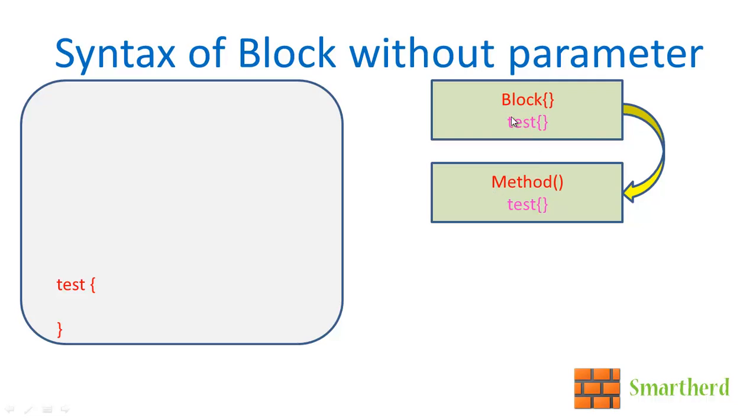When this test is executed, it will look for the method of name test. So we have to define a method here, def test. That is why we are using the same name for this block and this method also.